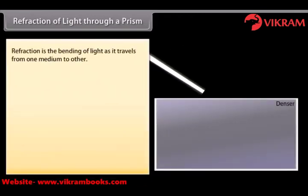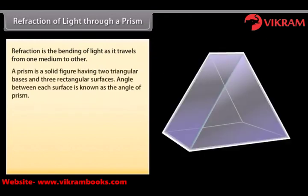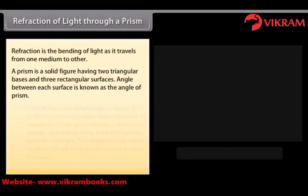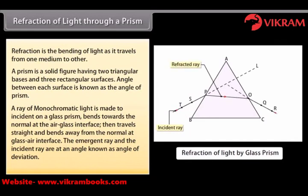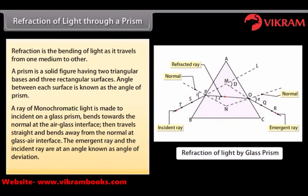Refraction is the bending of light as it travels from one medium to another. A prism is a solid figure having two triangular bases and three rectangular surfaces. The angle between each surface is known as the angle of prism. A ray of monochromatic light incident on a glass prism bends towards the normal at the air-glass interface, then travels straight and bends away from the normal at the glass-air interface. The emergent ray and the incident ray are at an angle known as the angle of deviation.